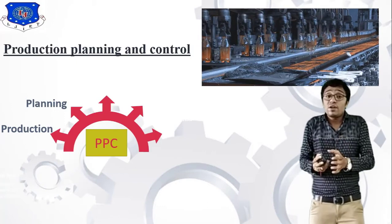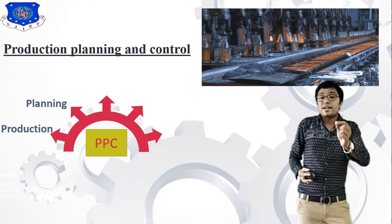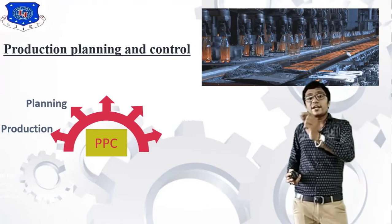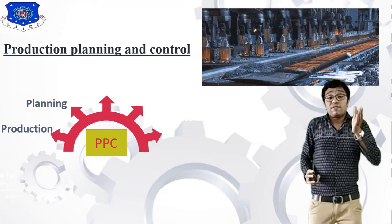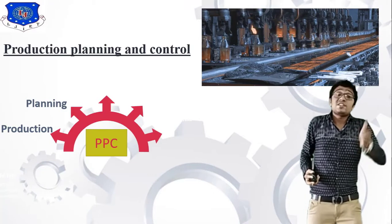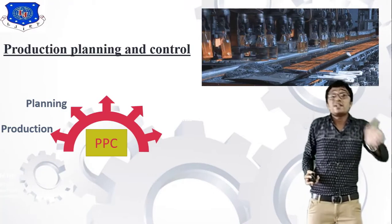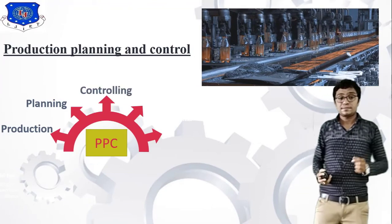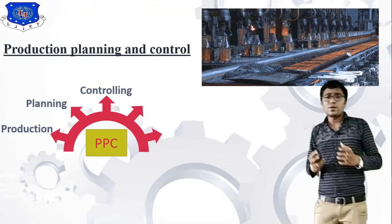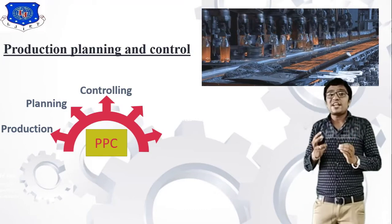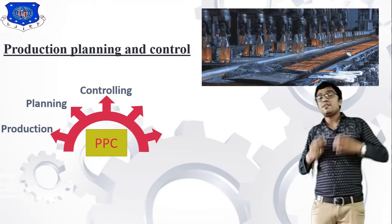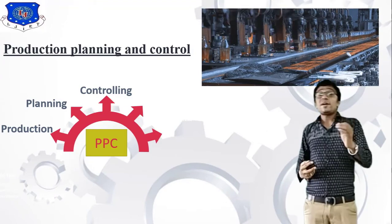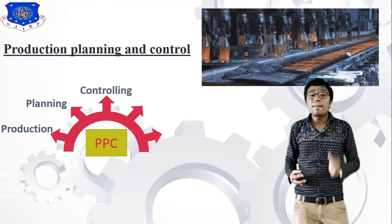Planning — for example, one product has a drilling operation and a cutting operation. You have to plan which operation comes first: is it drilling or cutting? That is planning. Third is controlling — you must check your product because our task is to improve productivity and reduce scrap. Controlling is a very important concept.